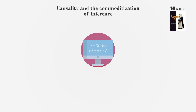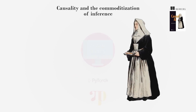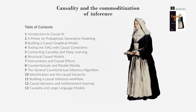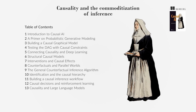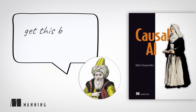We do this with a code-first approach that leverages tools like PyTorch and Pyro. This contrasts with traditional causal inference texts that read like cookbooks of mathematical recipes. Get this book at Manning.com.